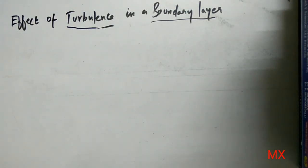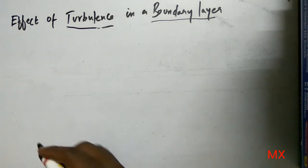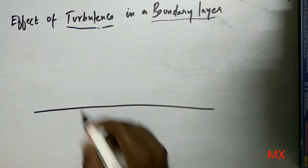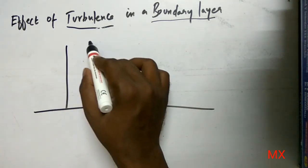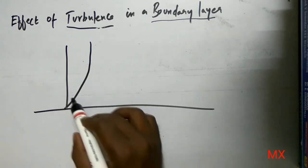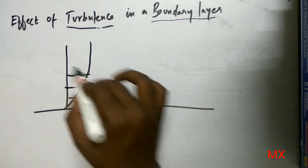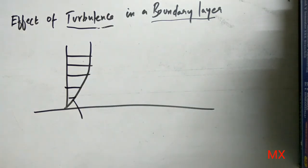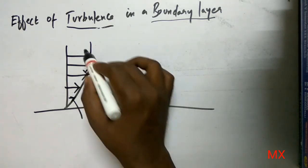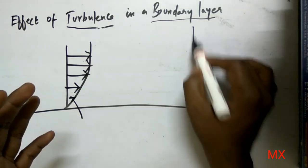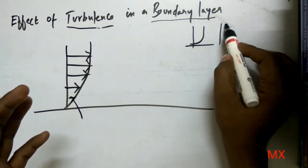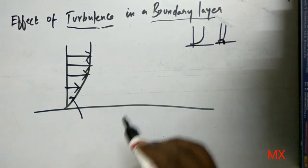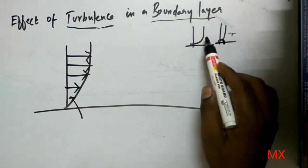Now we are going to see what turbulence causes in a turbulent boundary layer. We already saw the laminar boundary layer; now coming to the turbulent boundary layer. Consider a surface — the turbulent boundary layer profile will be very steep. You can see the difference between laminar and turbulent: laminar will be like this, and turbulent will be very steep. This is termed the turbulent boundary layer, and this is termed the laminar boundary layer.